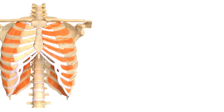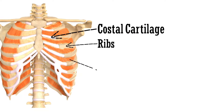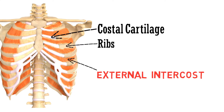Let's have a look. As you can see, these are the ribs, and this is the costal cartilage. These muscles which you can see are the external intercostal muscles.